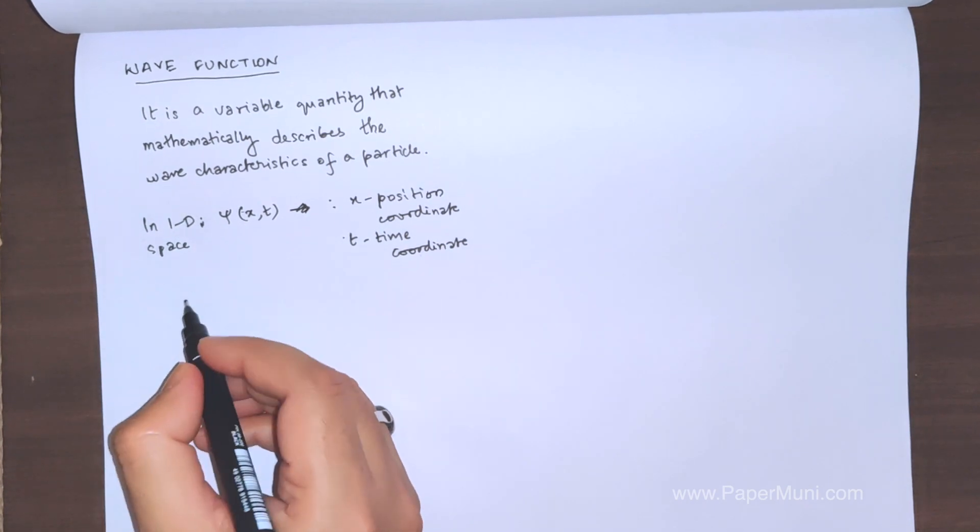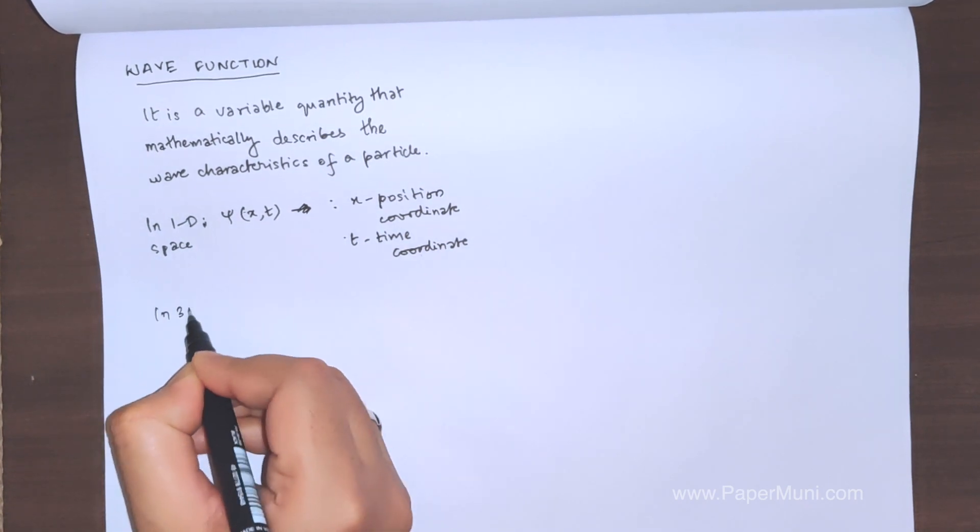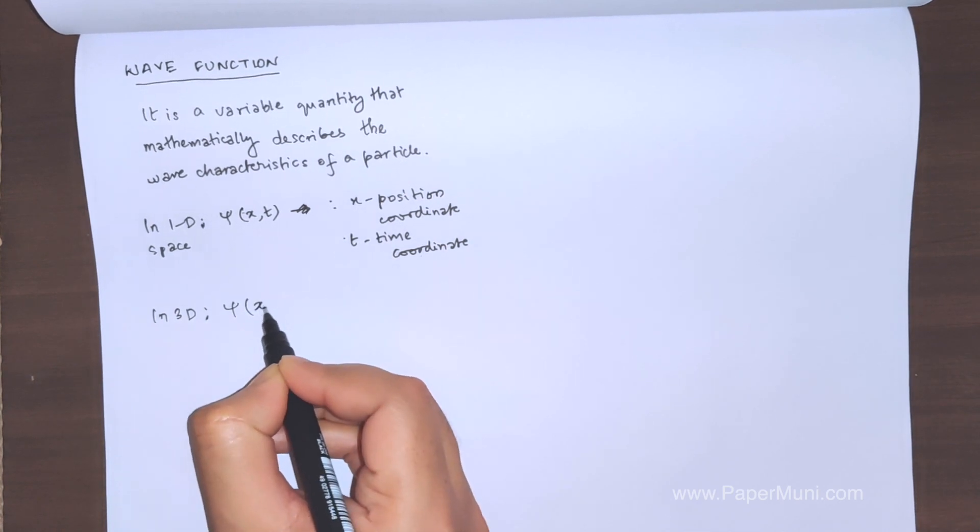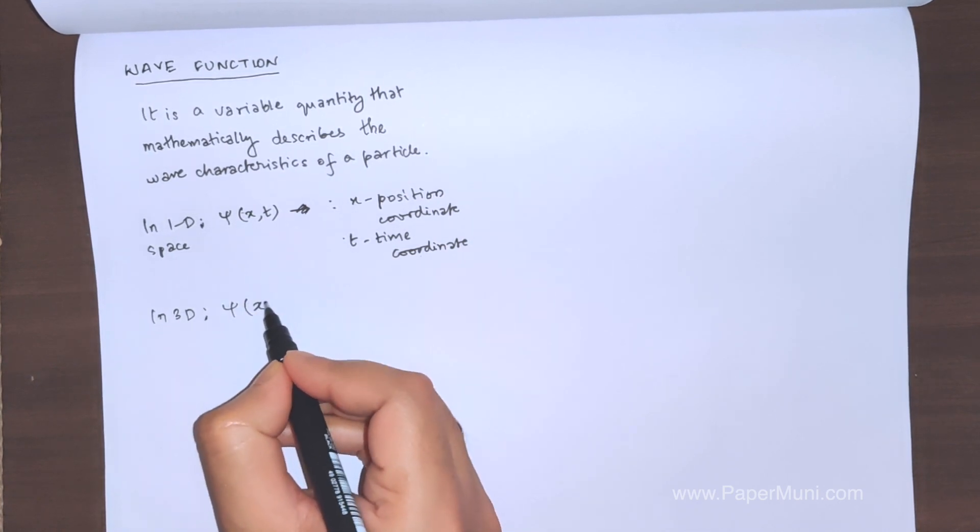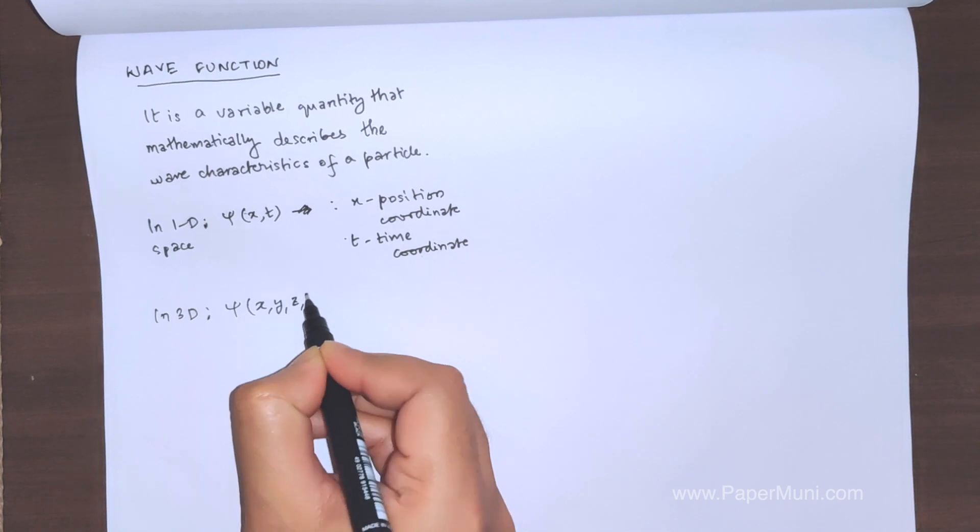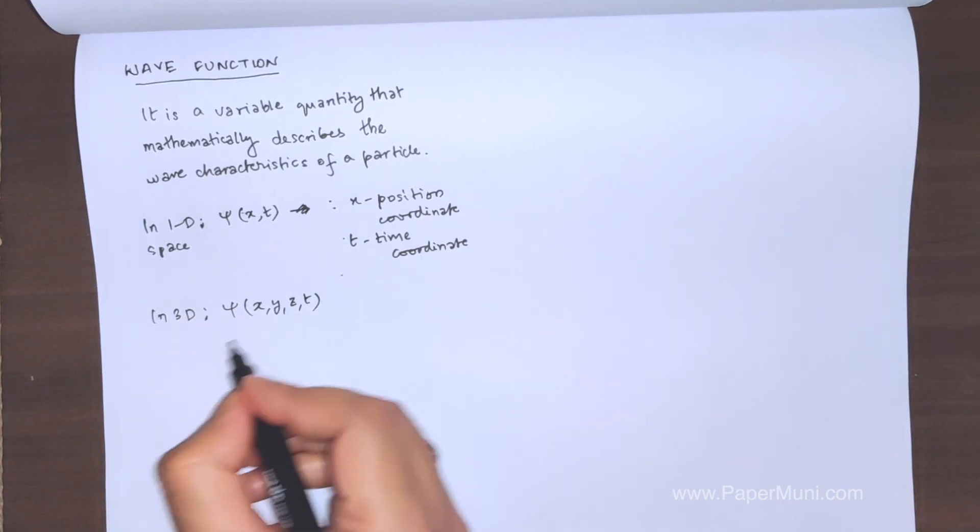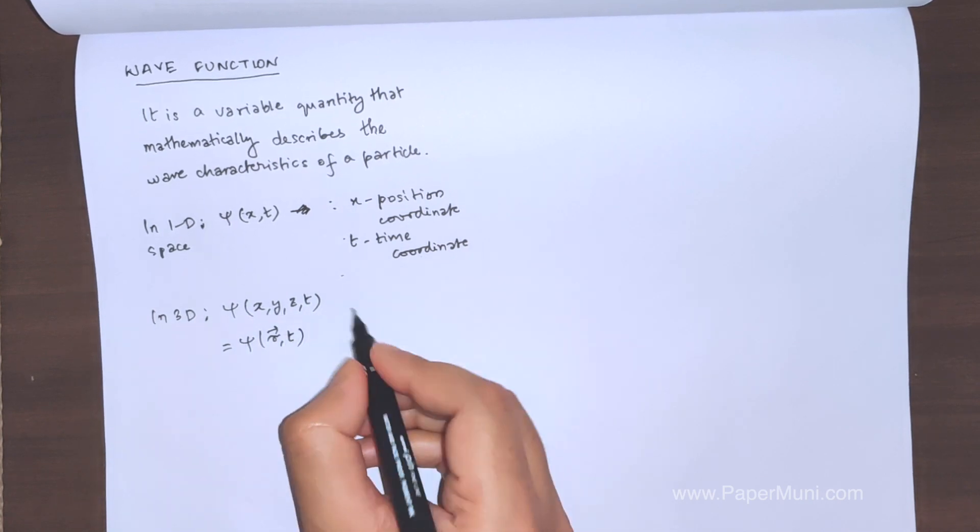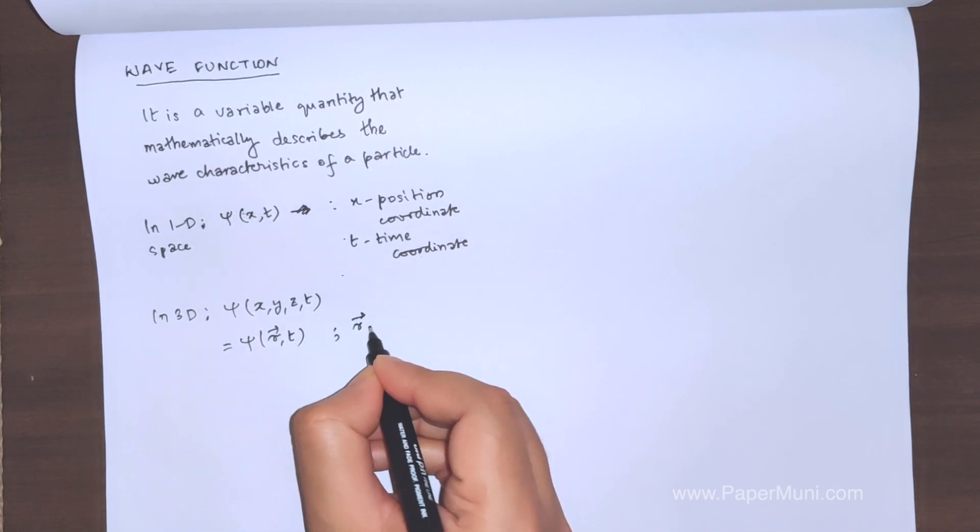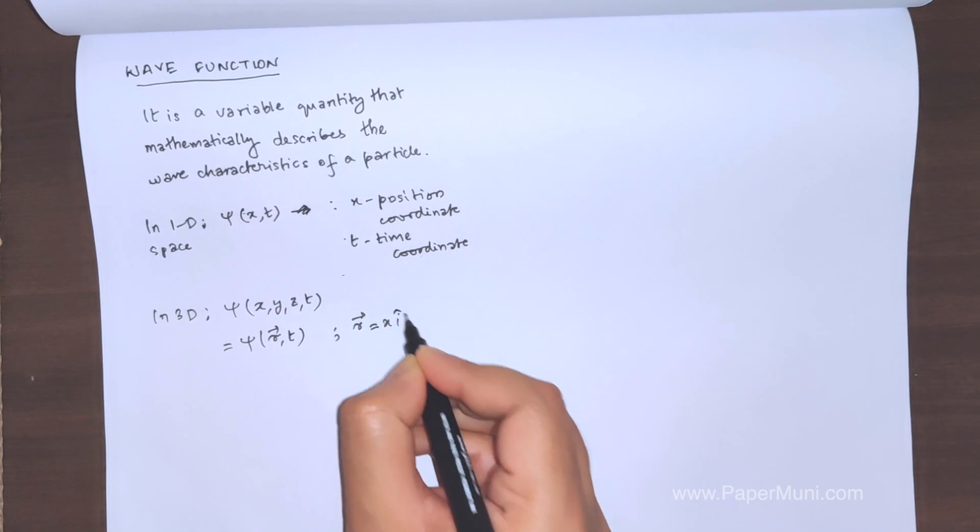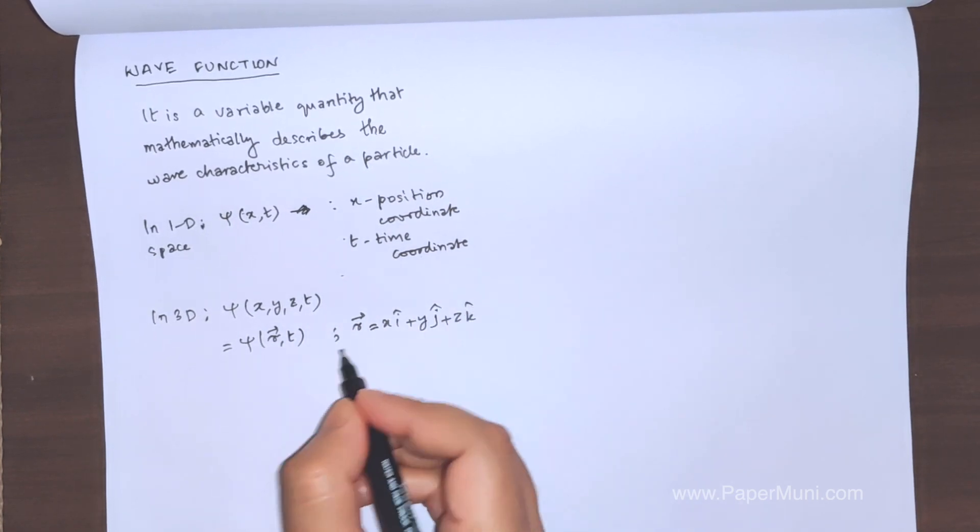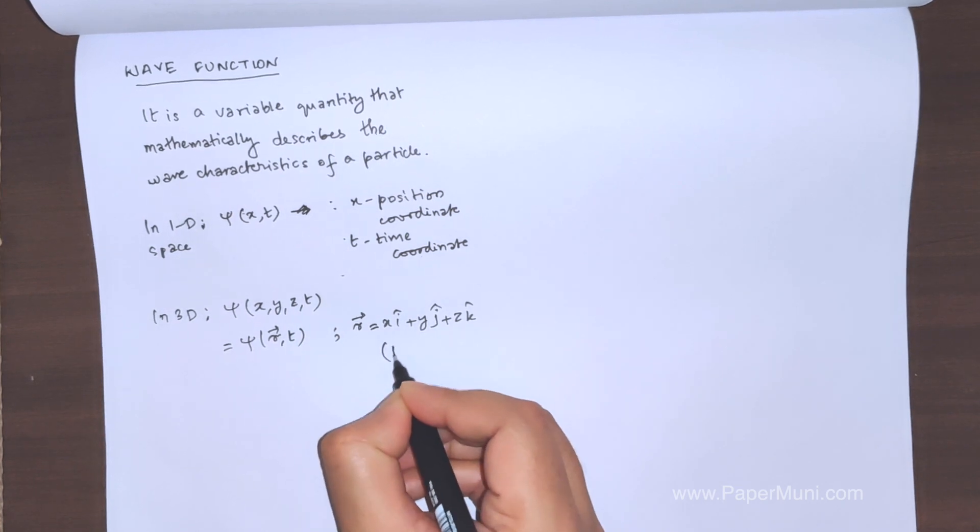In three dimensions, a wave function is represented by psi(x,y,z,t), or it is equivalently represented by r vector, which is the position vector: x i cap plus y j cap plus z k cap.